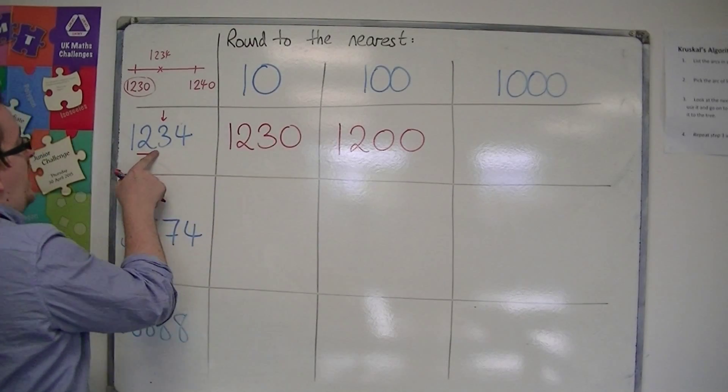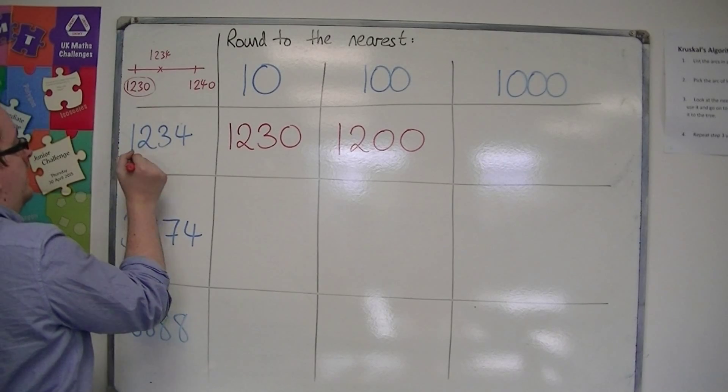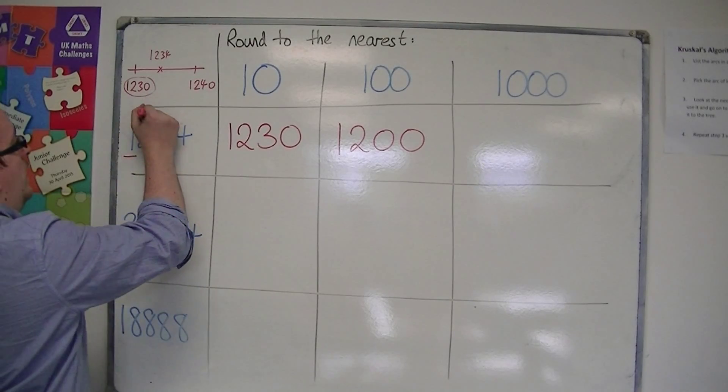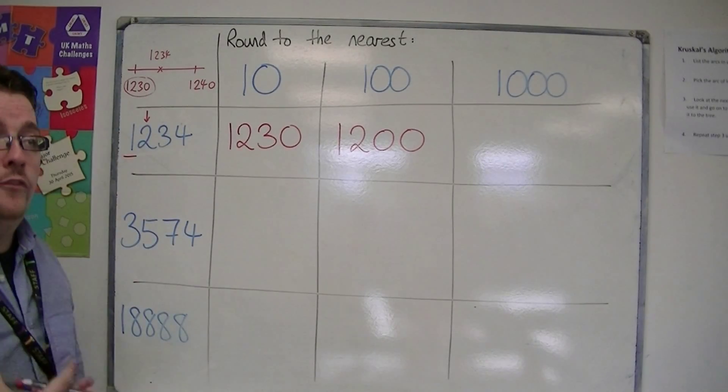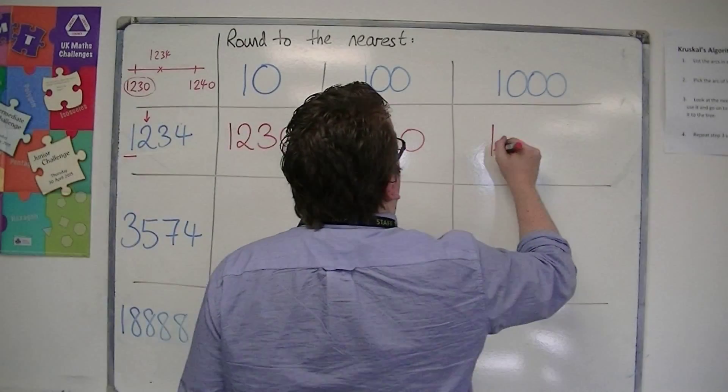To the nearest thousand, I move my attention one to the left again. To the thousands column, the one to the right is less than five, so I round down to 1,000.